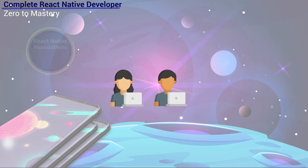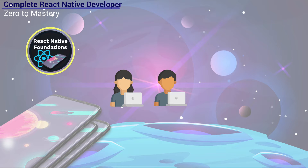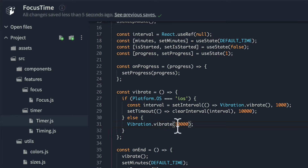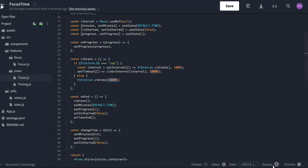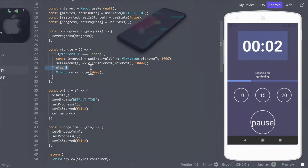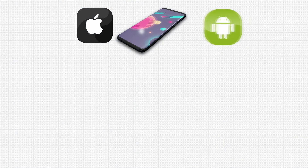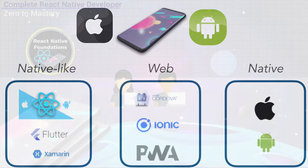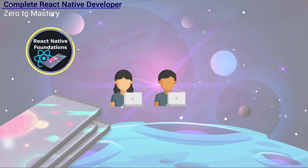So how do we start? Well, obviously the first thing we're going to do is learn about the React Native foundations — how does it work, what is actually happening, how do we write code and then have that code work on our phones? Everything to do with mobile development we're going to learn in this section. And in order for you to learn React Native, you also need to learn React.